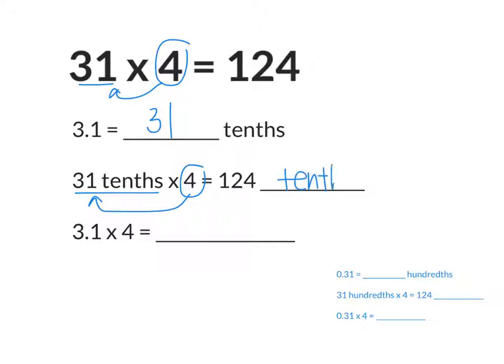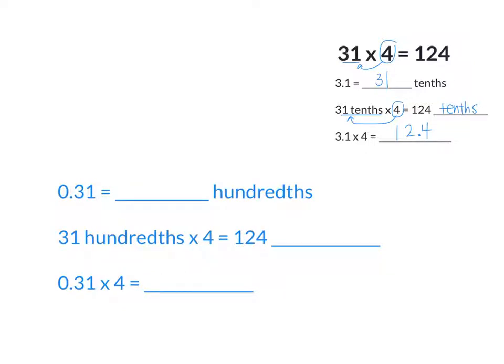Therefore, 3.1 times 4 in standard form is 124, and I need the 4 to be in the tenths place, so the decimal point goes right there. 0.31 is the same as how many hundredths? 31 hundredths. So 31 hundredths times 4 is 124 hundredths.